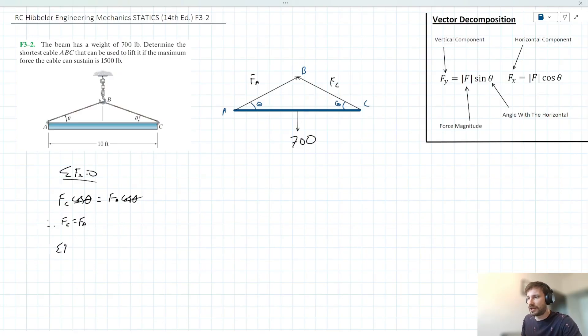We can move on then, and resolve vertically. Again, forces acting in the vertical are equal to zero, therefore things acting up are equal to things acting down.